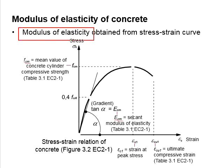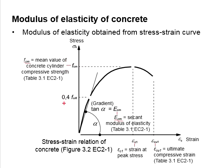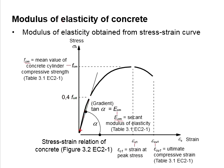The modulus of elasticity of the concrete can be obtained based on the gradient of the stress-strain curve. First, you need to determine fcm and then draw a horizontal line at 0.4 fcm. The intersection between the curve and the horizontal line will give the point at 0.4 fcm.